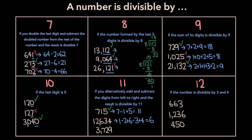For the number 3729, we get 3 minus 7 plus 2 minus 9. That's negative 4 plus 2, which is negative 2, minus 9, which is negative 11. Negative 11 is divisible by 11 — negative numbers can work too — and so 3729 is divisible by 11 as well.